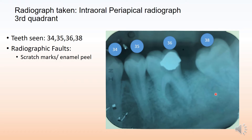We can visibly see that there is spacing where 3-7 should be, so it has to be the 3-7 that is missing. The radiographic fault we can see is some amount of enamel peel, probably because of what happened during the handling of this film.